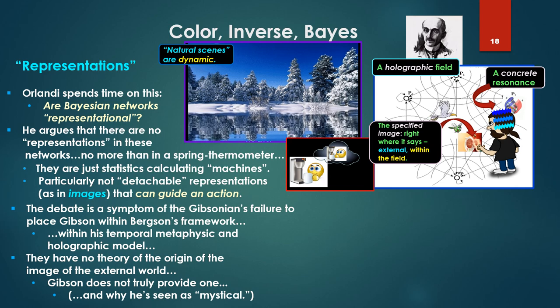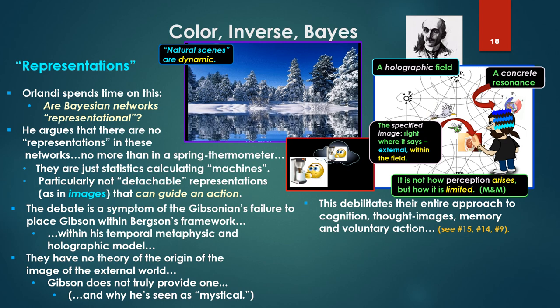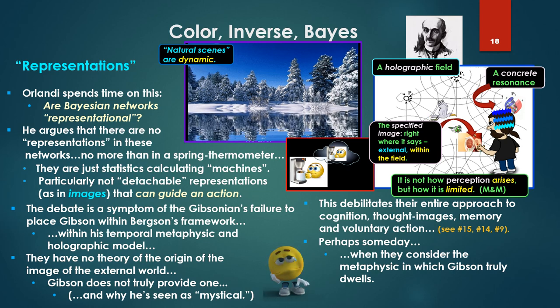Because of this they have no theory of the image of the external world. Gibson does not truly provide one, and this is the cause and core of why he's seen as mystical. Again to quote Bergson, it's not how perception arises but how it's limited. So this lack of the actual understanding of the origin of the image of the external world, therefore where images come from, if there even are any, debilitates their entire approach to cognition, but particularly the thought images, memory, the memory of images, involuntary action, images guiding memory, or idea, the ideomotor theory of voluntary action. Perhaps someday when they consider the metaphysic Gibson truly dwells, someday.